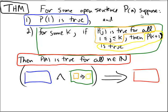We will prove the principle of strong induction. So, that would be, for some open sentence P(n), we will suppose that P(1) is true, and for some k, if P(j) is true for all j between 1 and k, then P(k+1) is true.